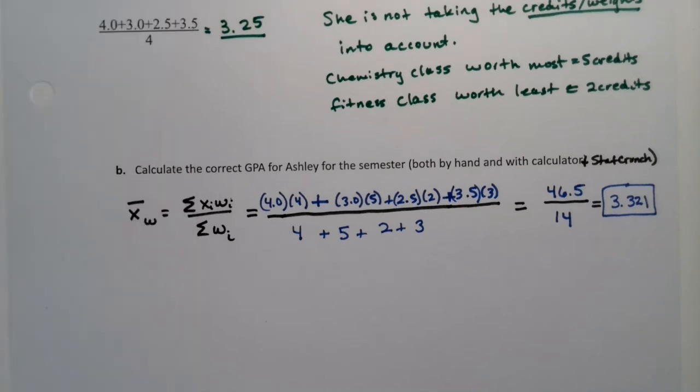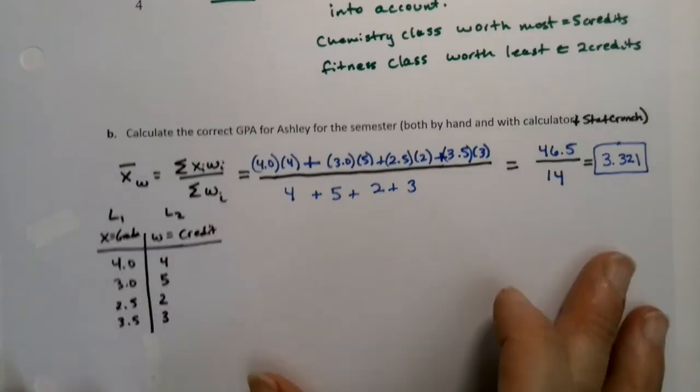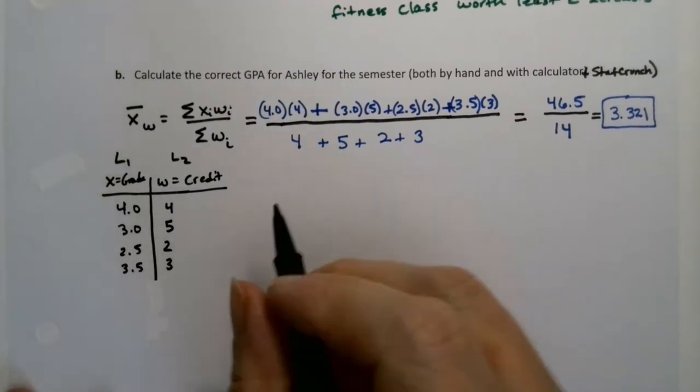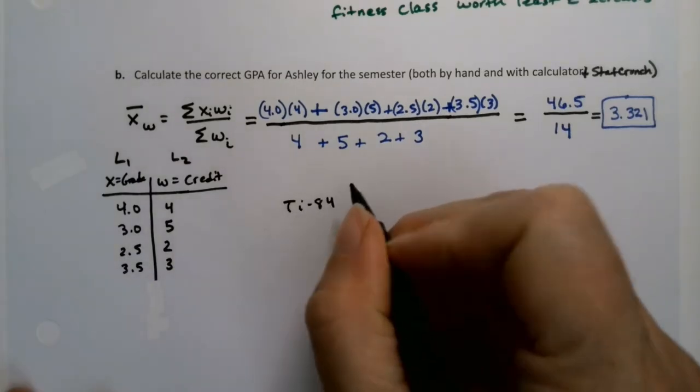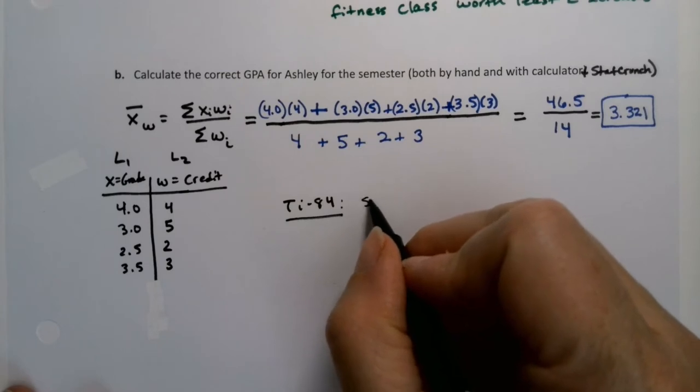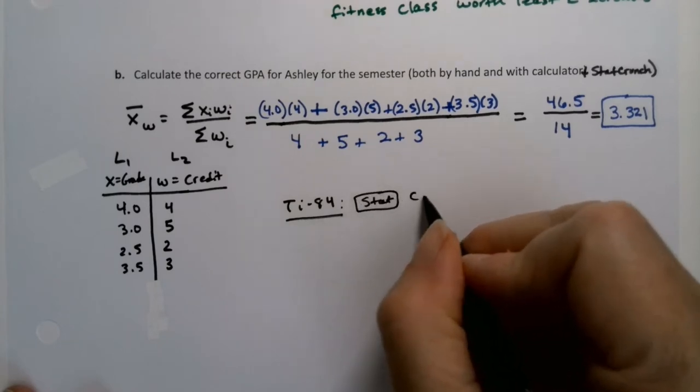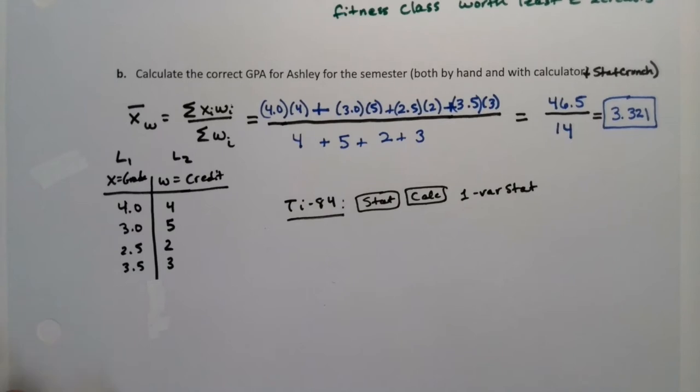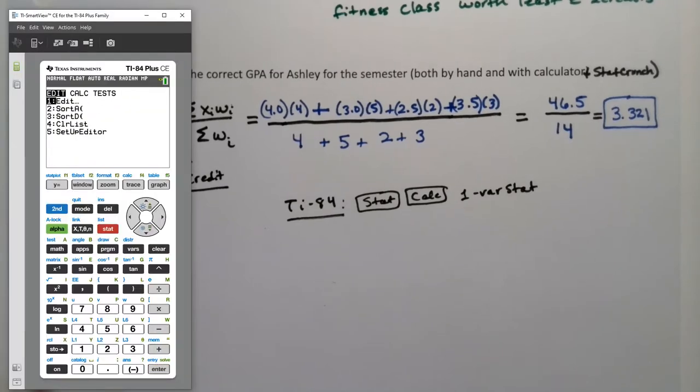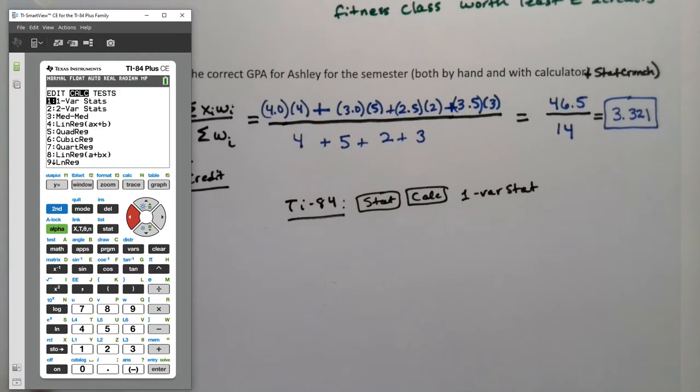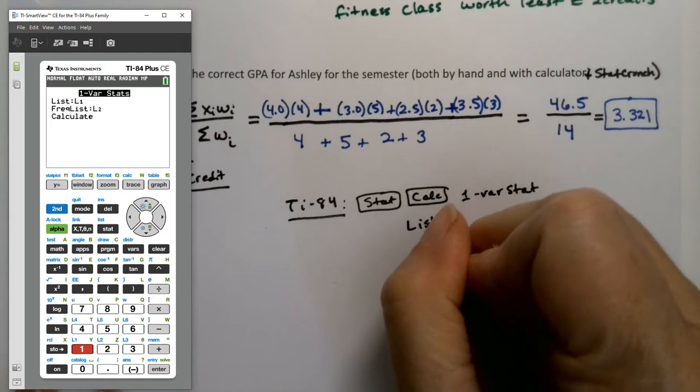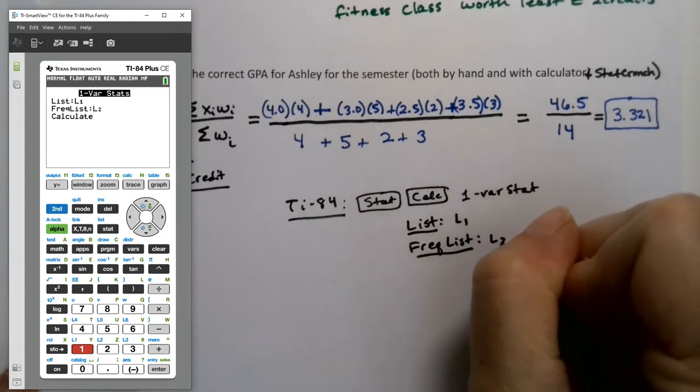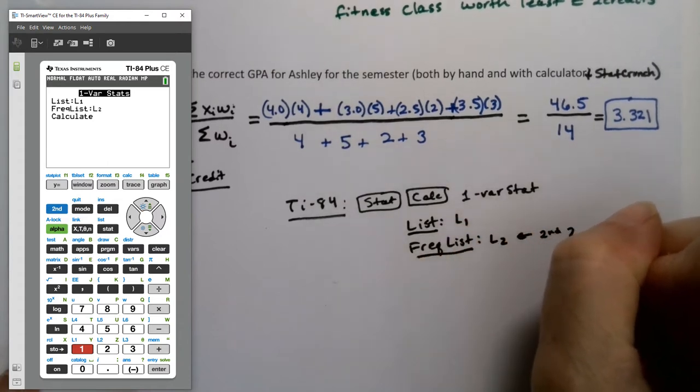I'm going to write that down. I made a table here, and this is actually the same table we'll make in StatCrunch. On the TI-83 or 84, you want to go to stats, then calc, then choose one variable stat. But the important part is you need to get your freak on - your frequency list on. You want calculate number one, you want that frequency list L2. So you want your list to be L1 and your frequency list to be L2. For that you hit second and two.